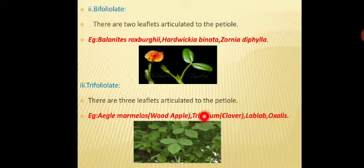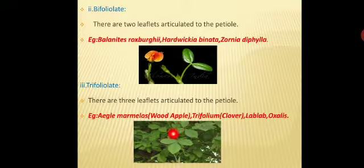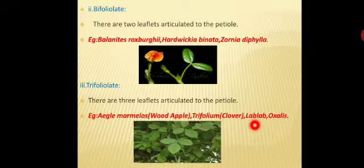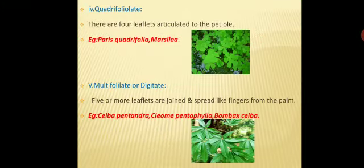Next is trifoliate — 'tri' refers to three. Three leaflets arise from the petiole. Examples include Aegle marmelos (bilva/bael), where we can see three leaflets. Other examples are Trifolium (clover), Lablab purpureus (avarai), and Cajanus. These are examples of trifoliate leaves.